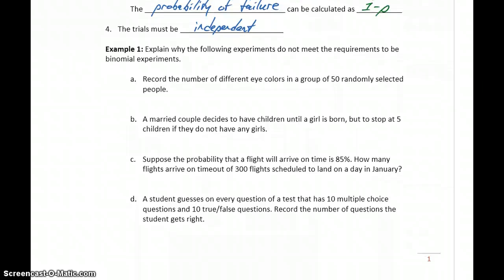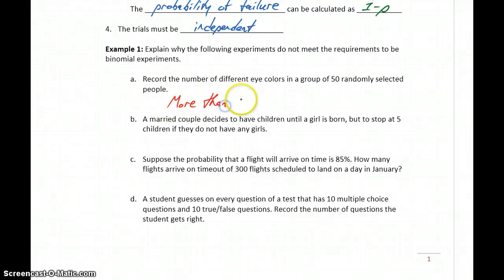In our first example, let's look at a few cases where these conditions don't hold. In part A, we want to record the number of different eye colors in a group of 50 randomly selected people. The issue here is that there are more than two possible outcomes — people could have brown eyes, blue eyes, green eyes. As soon as we have more than two outcomes, the conditions aren't met for the binomial distribution.